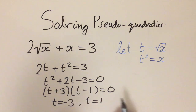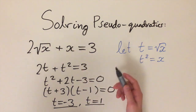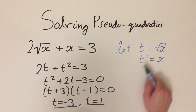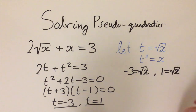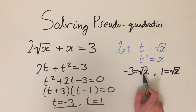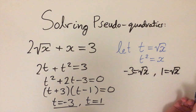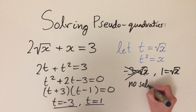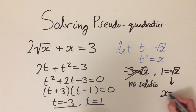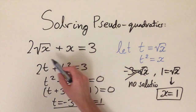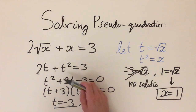Setting each bracket equal to zero gives t equals minus 3 and t equals 1. Now we need to go back to the substitution to find x. We have minus 3 equals √x and 1 equals √x. But minus 3 equals √x is impossible — the square root of a number cannot equal a negative number — so that leads to no solution. From 1 = √x, squaring both sides gives x equals 1, which is the only solution.